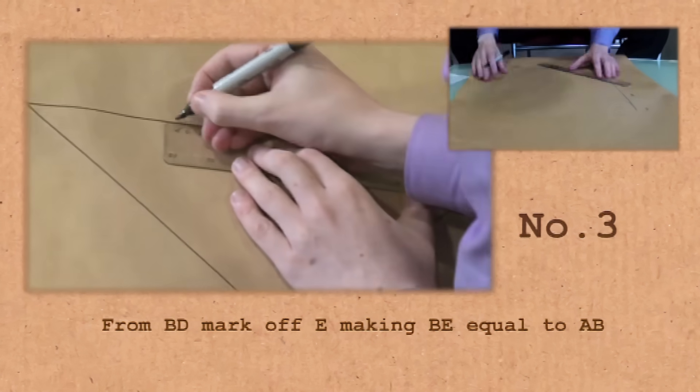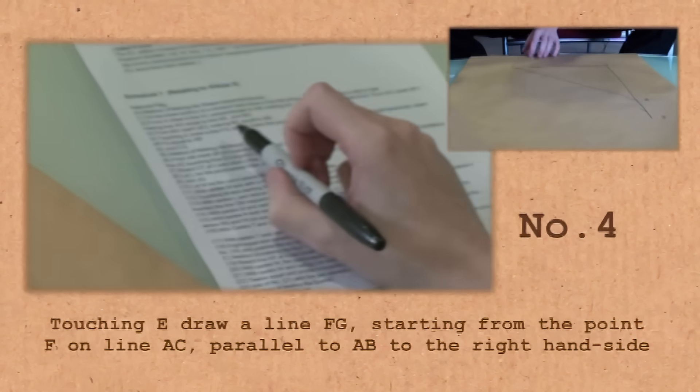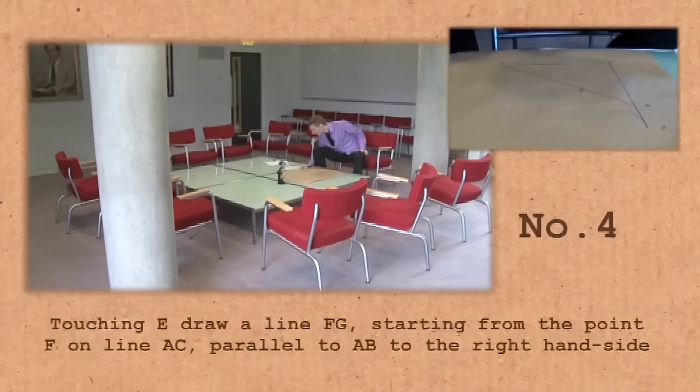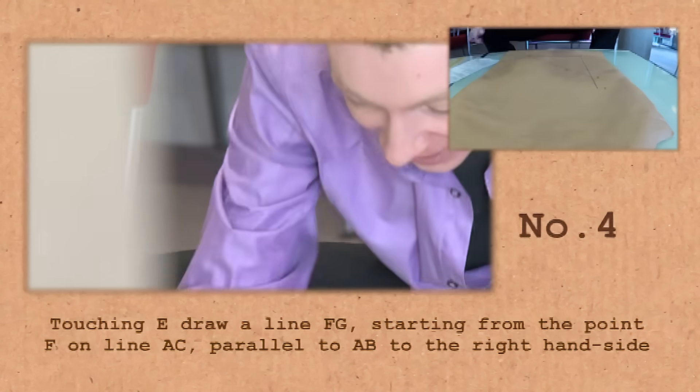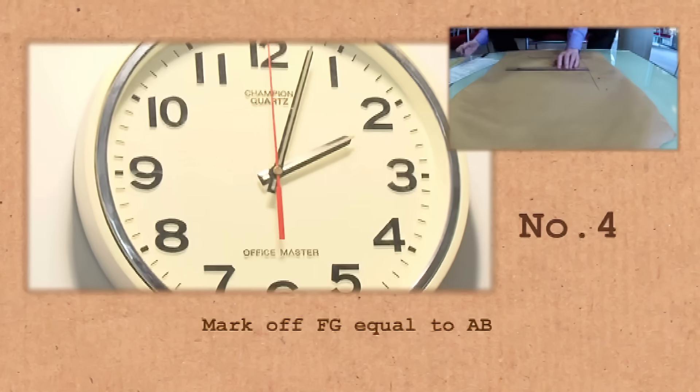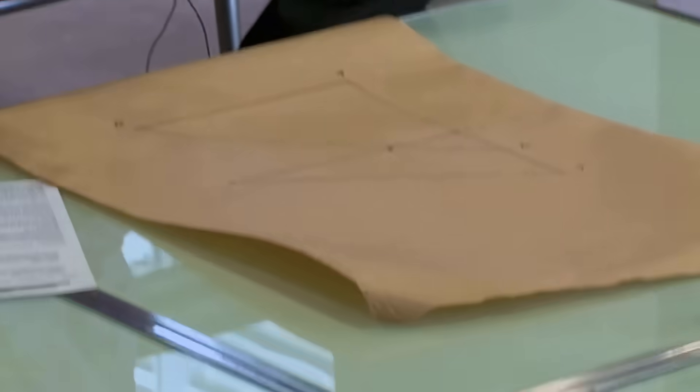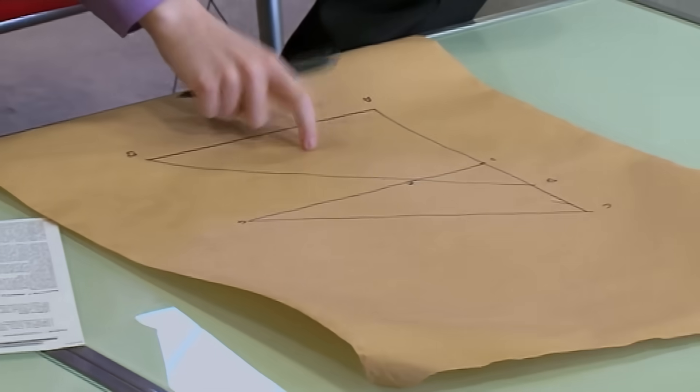From BD, mark off E, making BE equal to AB. 4. Touching E, draw a line FG starting from the point F on line AC parallel to AB to the right-hand side. Mark off FG equal to AB. 5. Join CG. I believe it is the only flag for a country that isn't a square or a rectangle. It makes it very unusual. But Nepal are bucking the trend. They're sticking with it. This is their flag and they're sticking with it.